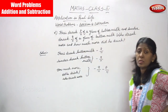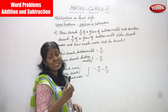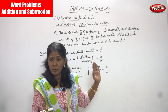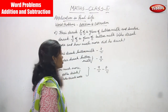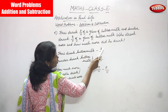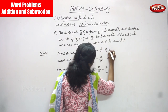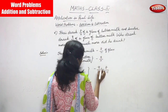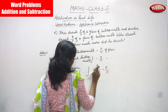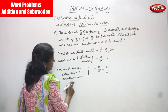First we have to find out whether this question is addition or subtraction. Hari drank buttermilk — eight by eleven of a glass. Sundar drank buttermilk — nine by eleven of a glass.